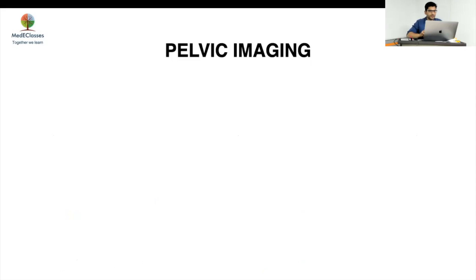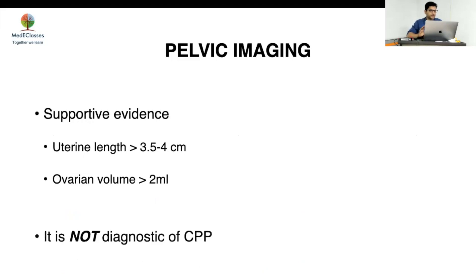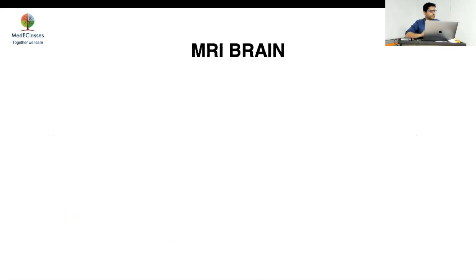Regarding pelvic imaging: uterine length more than 3.5 cm, ovarian volume more than 2 mL, and endometrial thickness more than 3 mm may warn us, while a follicle of 5 mm is indicative of imminent menses. However, these are not diagnostic and should be used as supportive findings only. Many patients may present with some breast development that subsequently regresses — puberty may show a stuttering course — so follow-up is important rather than relying on a single assessment.